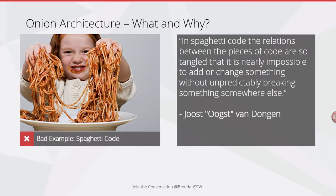I'm going to start by briefly talking about why we have these conversations about architecture in the first place, and for me the reason is spaghetti code. In spaghetti code, the relations between the pieces of code are so tangled that it is nearly impossible to add or change something without unpredictably breaking something somewhere else. Any experienced developer will have experienced this — you start off with the best of intentions but over time cruft and changes accumulate and you're left with spaghetti code.